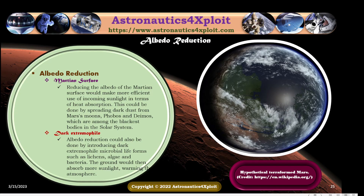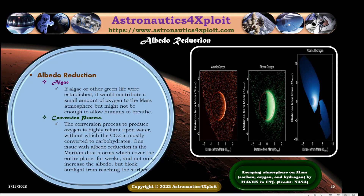Albedo reduction: Reducing the albedo of the Martian surface will make more efficient use of incoming sunlight in terms of heat absorption. This could be done by spreading dark dust from Mars's moons Phobos and Deimos, which are among the blackest bodies in the solar system. Albedo reduction could also be done by introducing dark extremophile microbial life forms such as lichens, algae, and bacteria. The ground will then absorb more sunlight, warming the atmosphere. If algae or other green life were established, it would contribute a small amount of oxygen to the Mars atmosphere, but it might not be enough to allow humans to breathe. The conversion process to produce oxygen is highly reliant upon water, without which carbon dioxide is mostly converted to carbon hydrates.